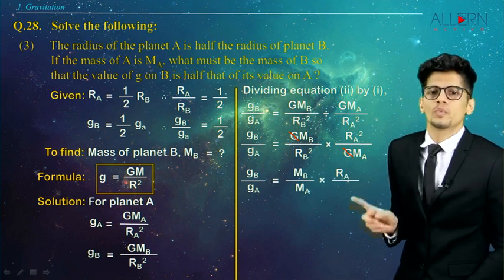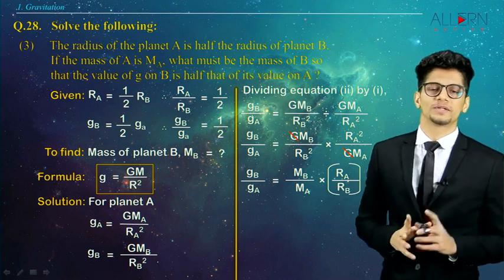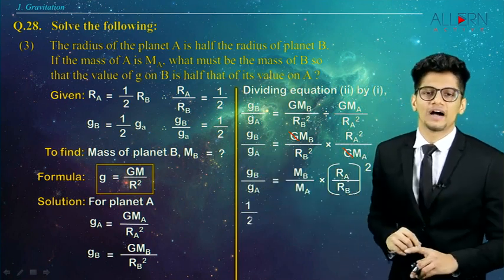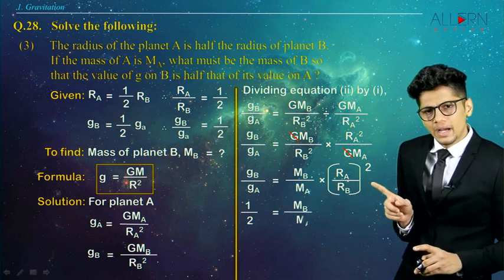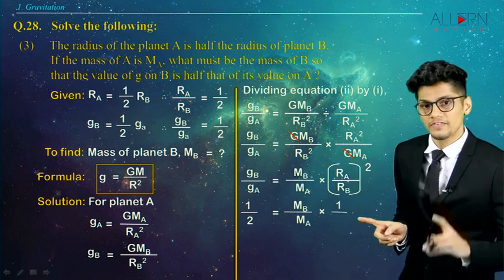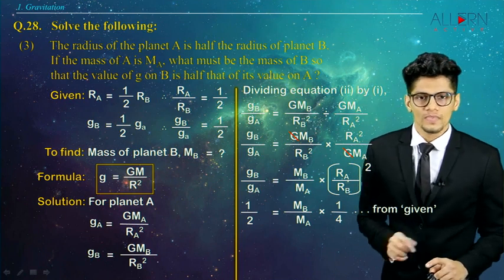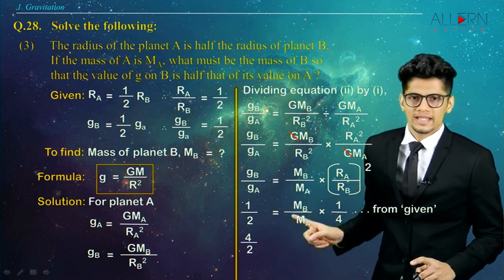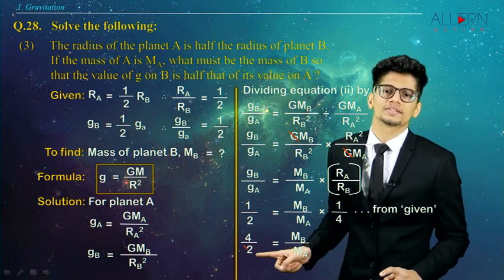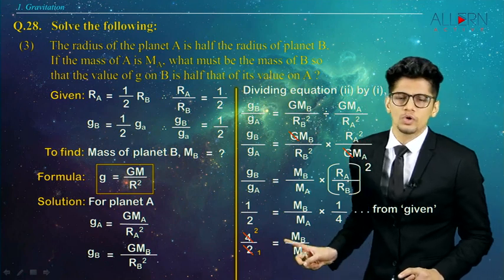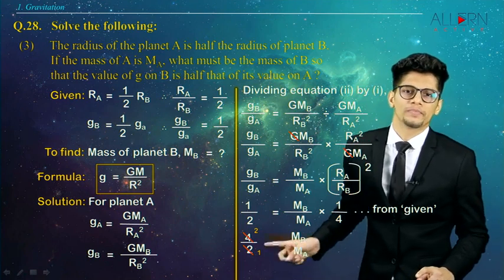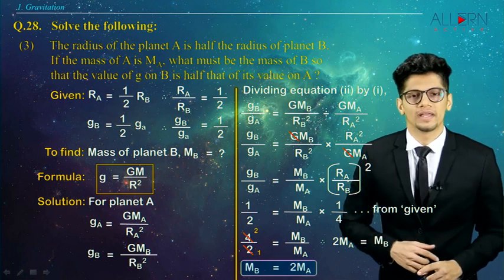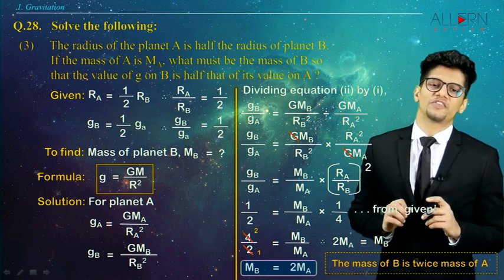Since both are squared, we write it as M_B upon M_A times (R_A upon R_B) whole squared. Substituting the values: G_B upon G_A is half, and R_A upon R_B is also half, so half squared is 1 upon 4. So half equals M_B upon M_A times 1/4. Shifting 4 to the left gives 4 upon 2 equals M_B upon M_A, which simplifies to 2 equals M_B upon M_A. Therefore M_B equals 2·M_A — mass of planet B is twice the mass of planet A.